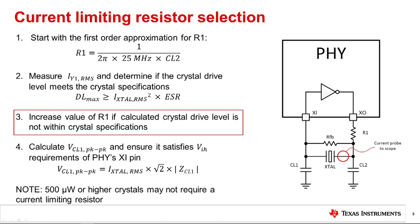Next, ensure the drive level does not violate the vendor's datasheet. If the calculated drive level is above the maximum drive level stated in the datasheet, increase the value of R1 to decrease the current through the crystal.